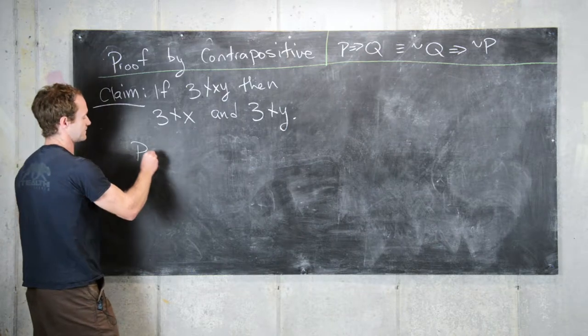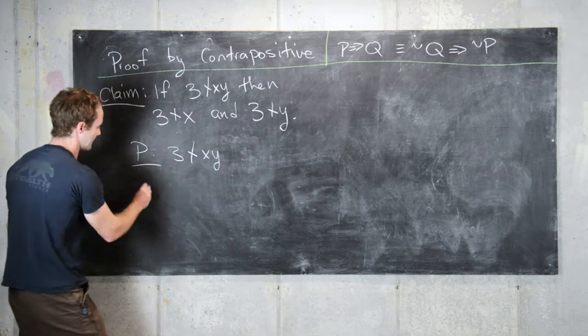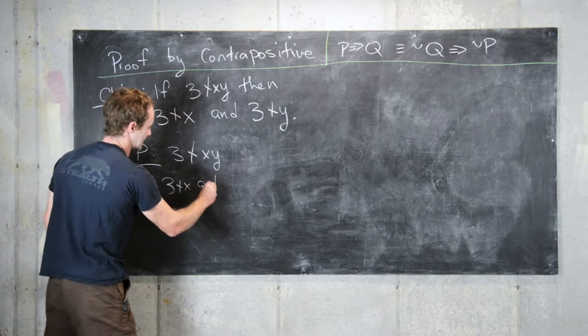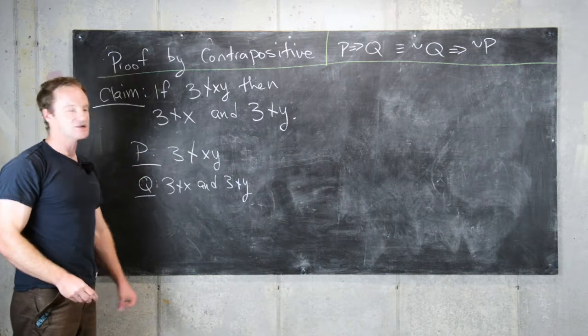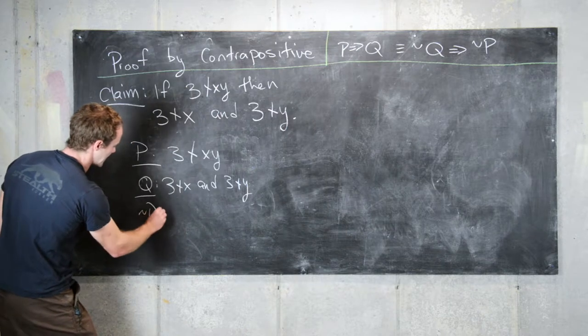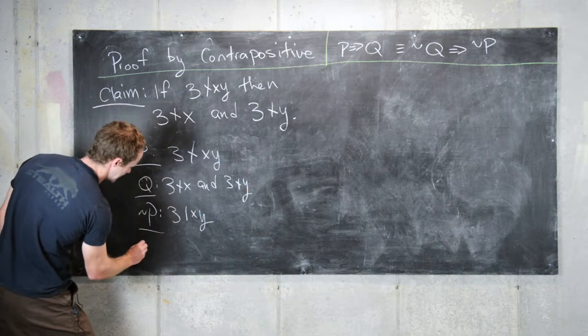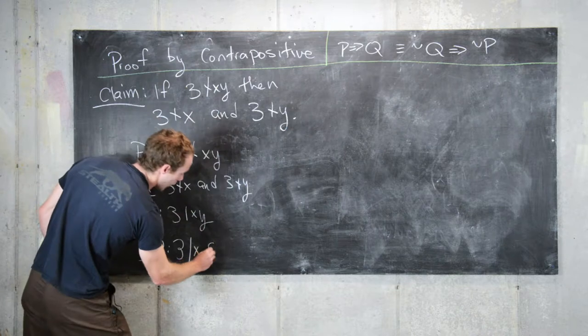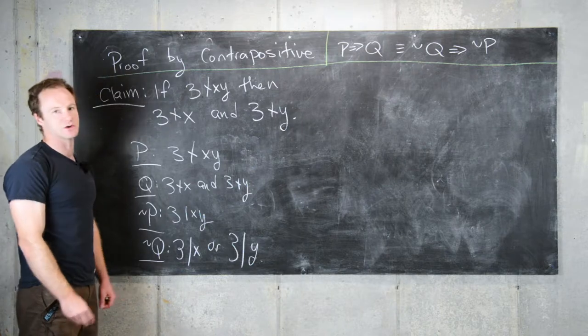The statement P is 3 does not divide XY, and the statement Q is 3 does not divide X and 3 does not divide Y. The negations are straightforward: not P will be 3 does divide XY, and not Q will be 3 divides X or 3 divides Y. When you negate a statement, and turns into an or.